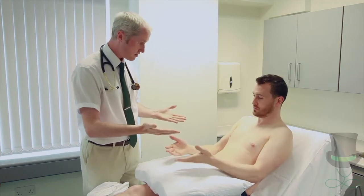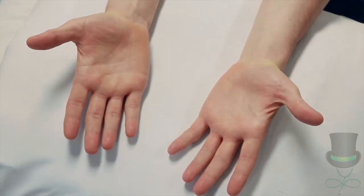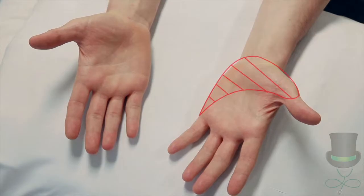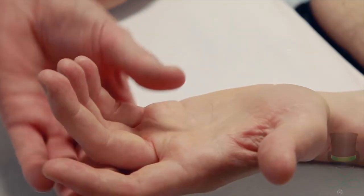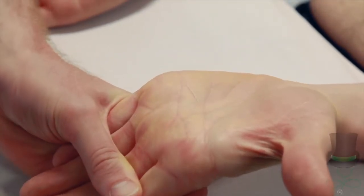Ask the patient to turn their hands over. Look for palmar erythema, which usually appears in the hypothenar eminence. Check for pallor of the palmar creases, which is seen in anemia.